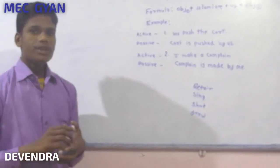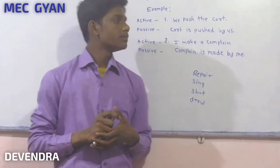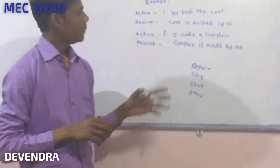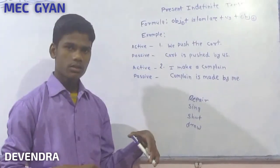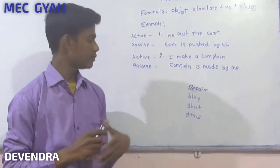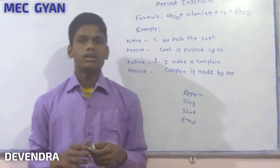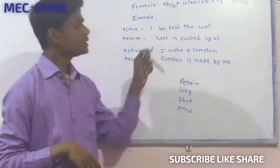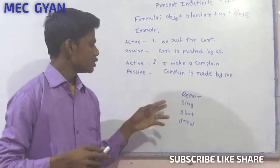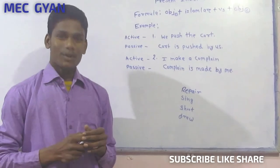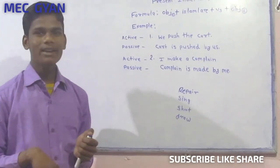Shoot: We shoot a picture. In passive voice, the picture is shot by us. Draw: He draws a diagram. In passive voice, the diagram is drawn by him.